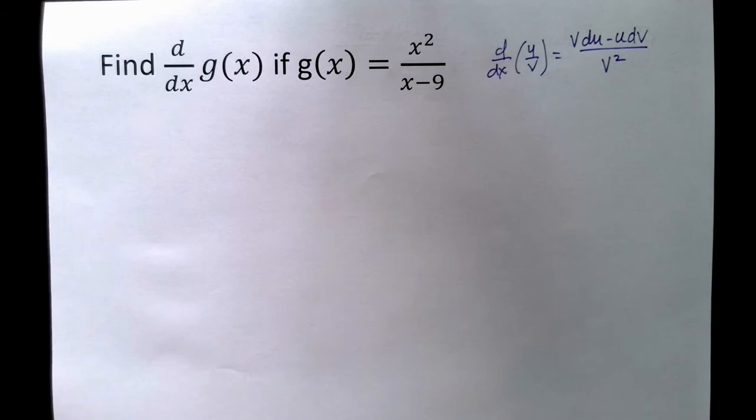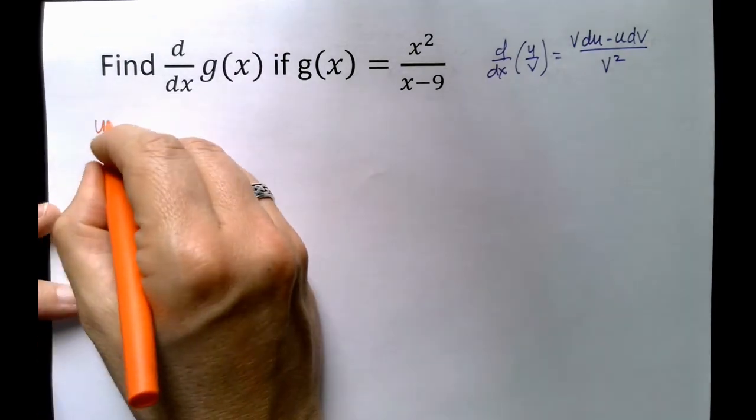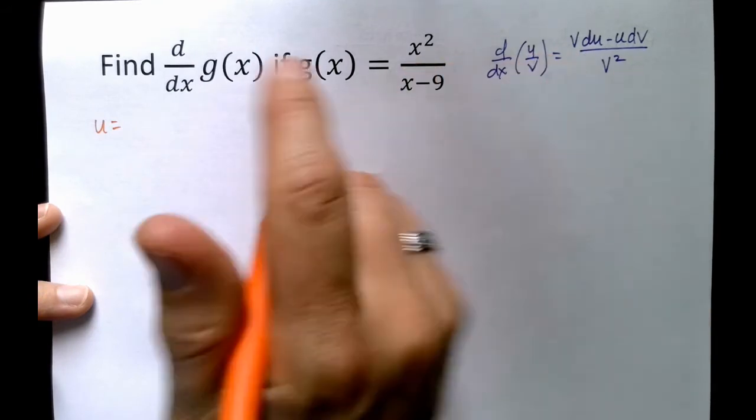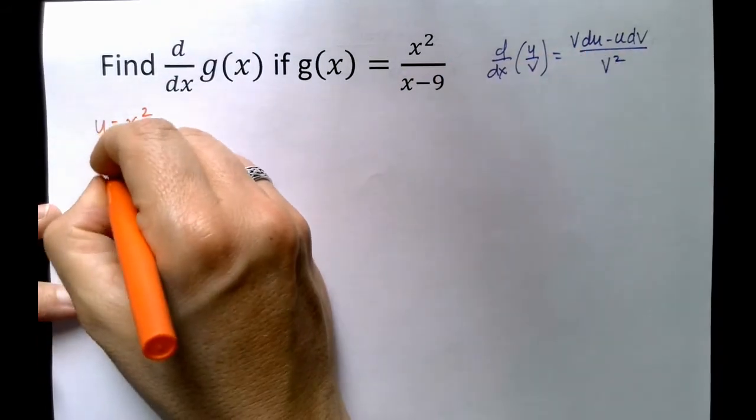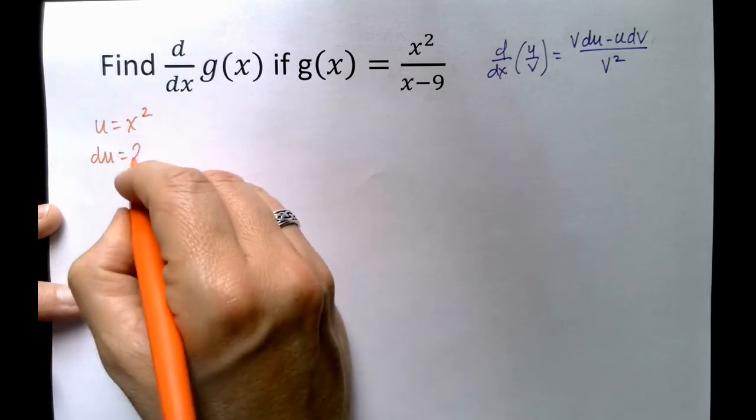So the next step is to identify what is u and what is v. In other words, what is my numerator and what is my denominator. In this case, my numerator is x squared. And I'm going to need a du. So using power rule, du is 2x.